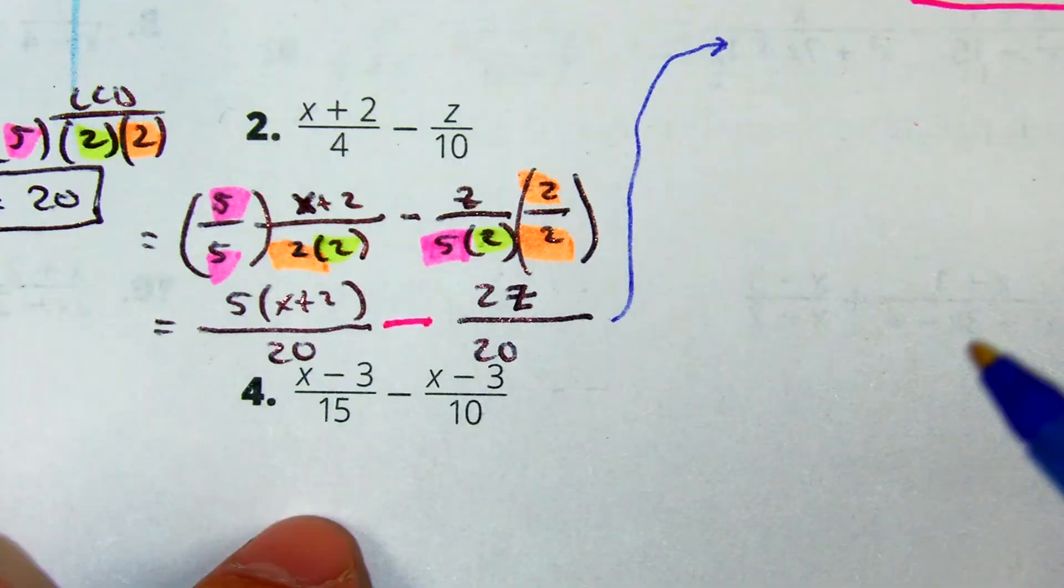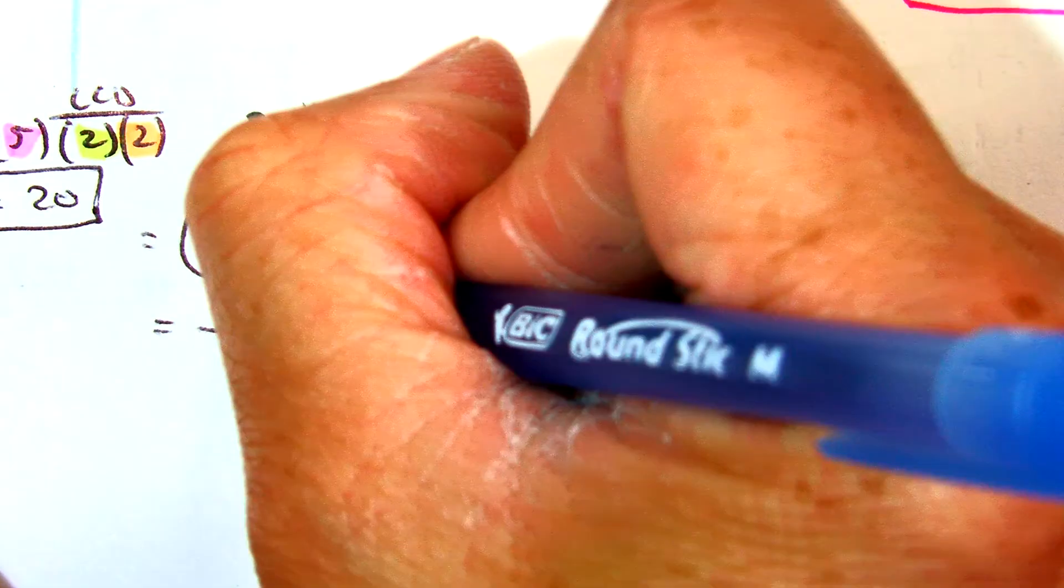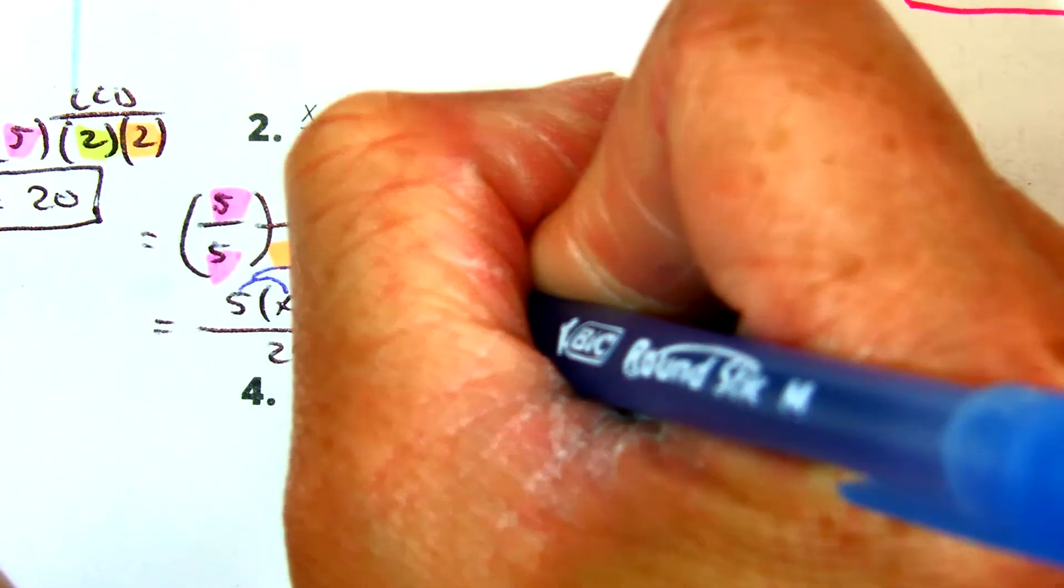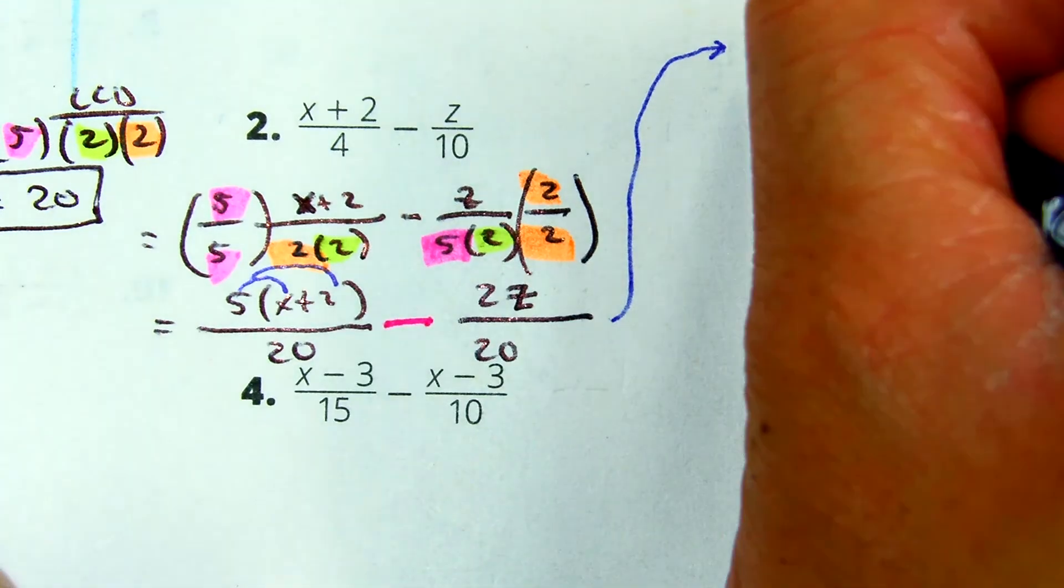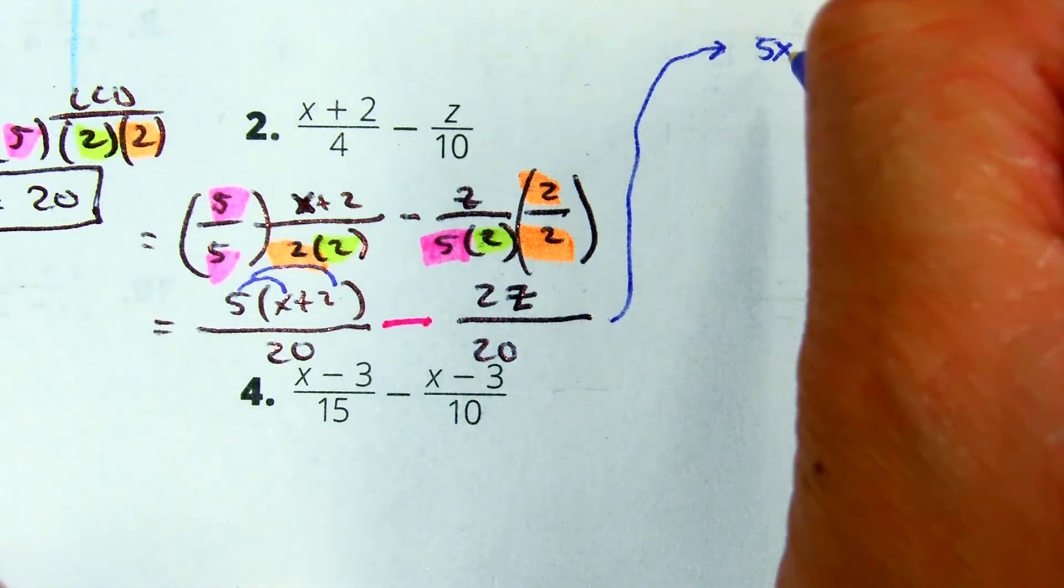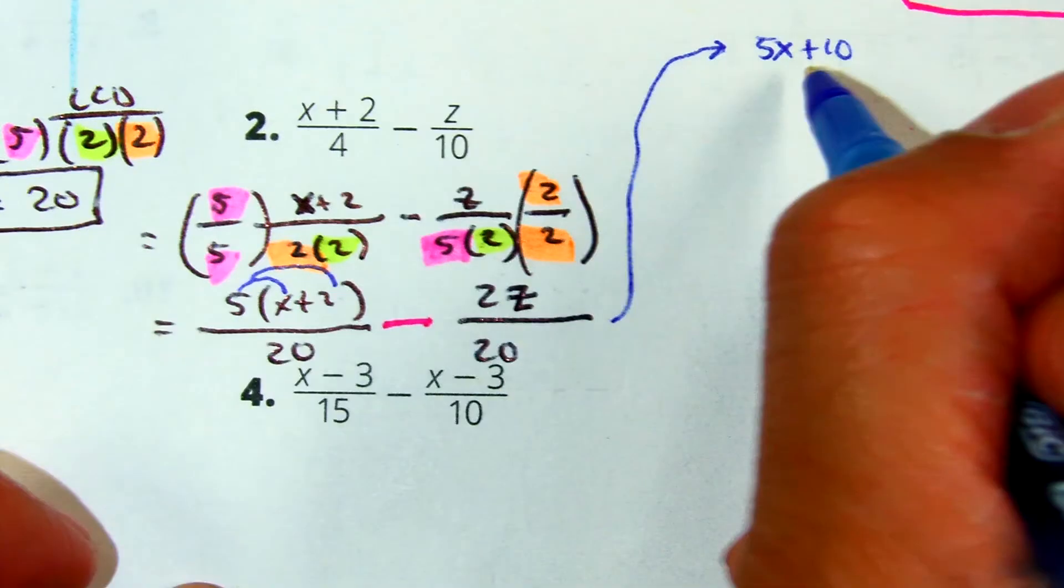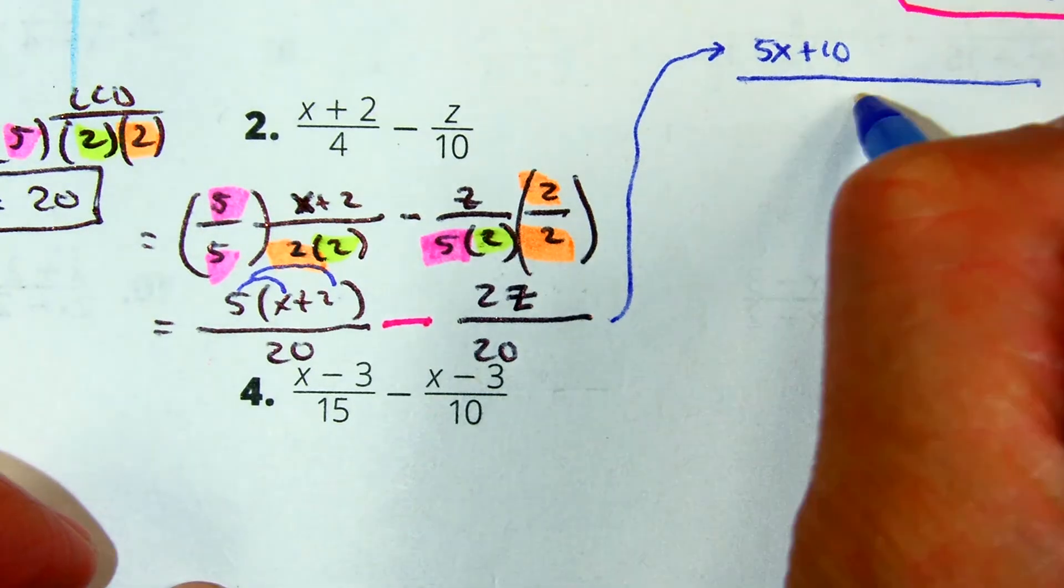Class, what do I have to do with that 5? We're going to what? We're going to distribute. Class, 5 times x. And 5 times 2 is 10. Now, because the denominators are 20, they have a common denominator, I can put it together now.